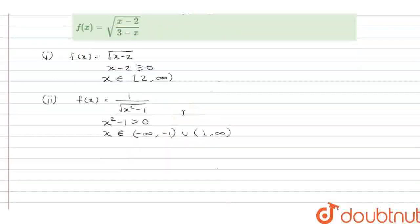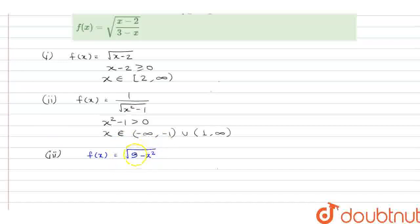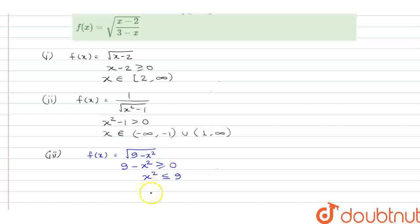Similarly, let's look at function number three: f(x) = √(9 - x²). This is also a real valued function, so it will exist for all real numbers where 9 - x² ≥ 0. This means x² ≤ 9, so the domain of the function is [-3, 3].